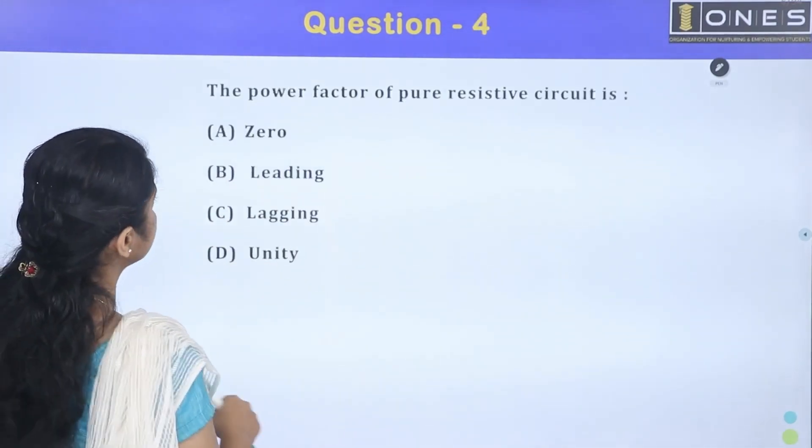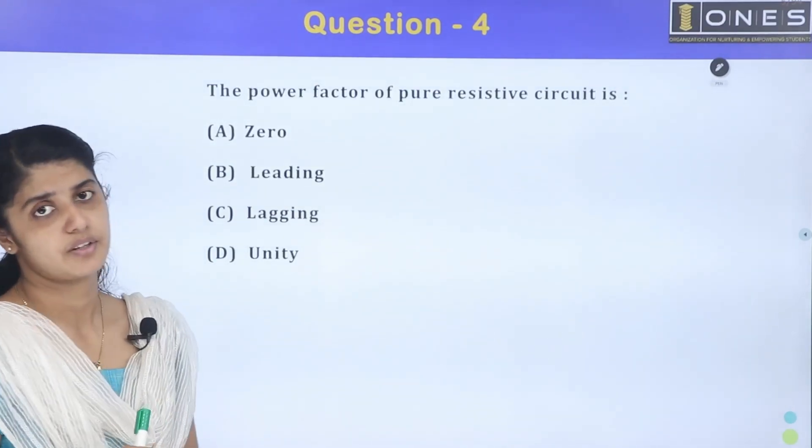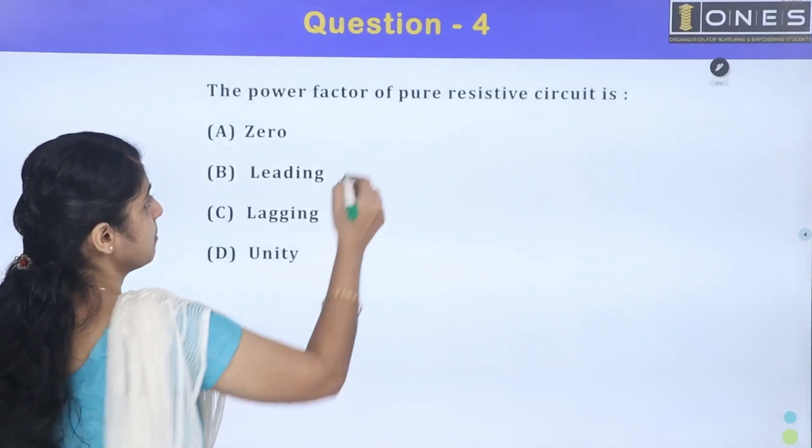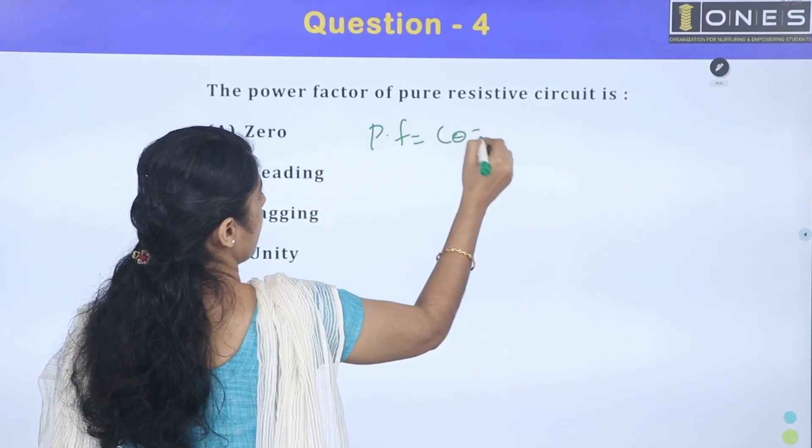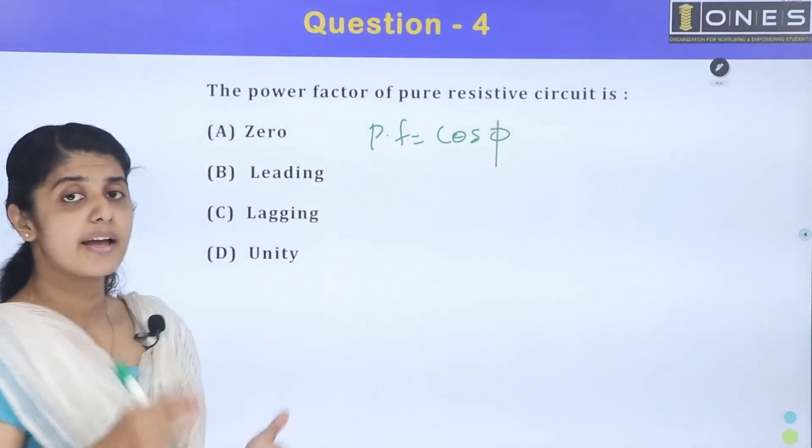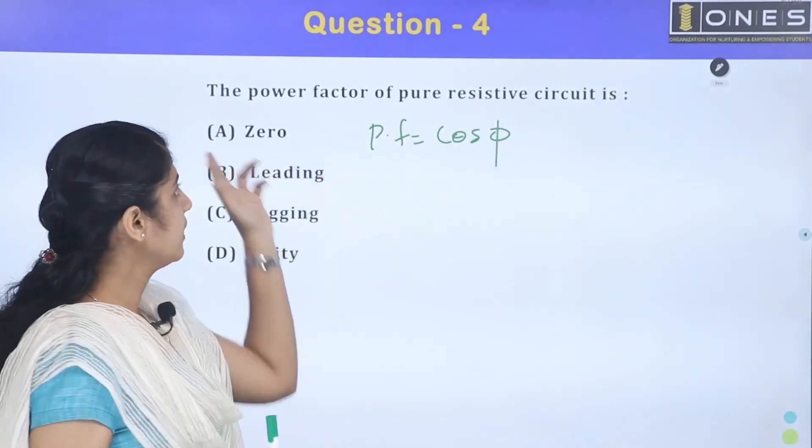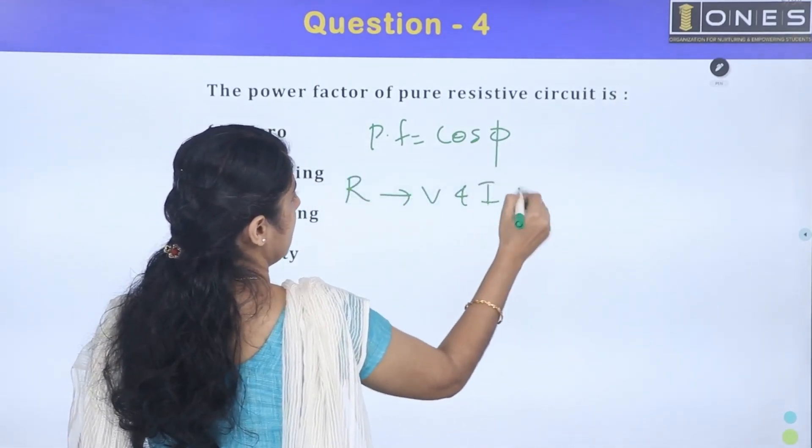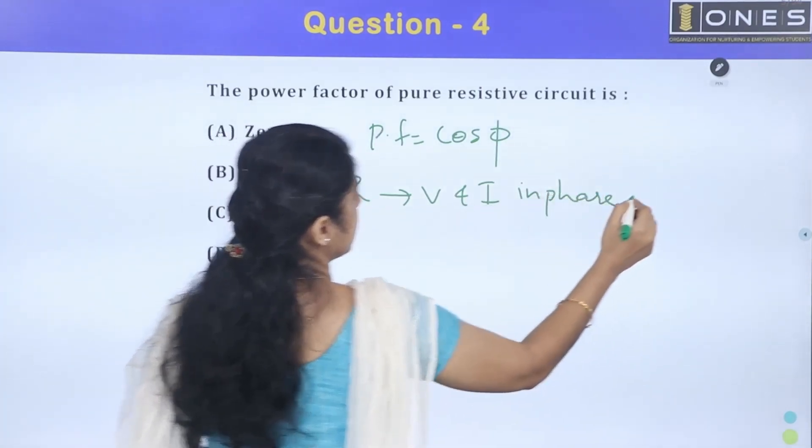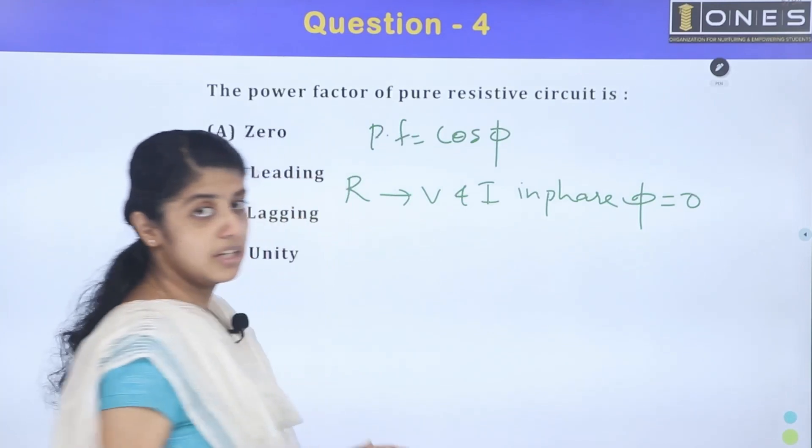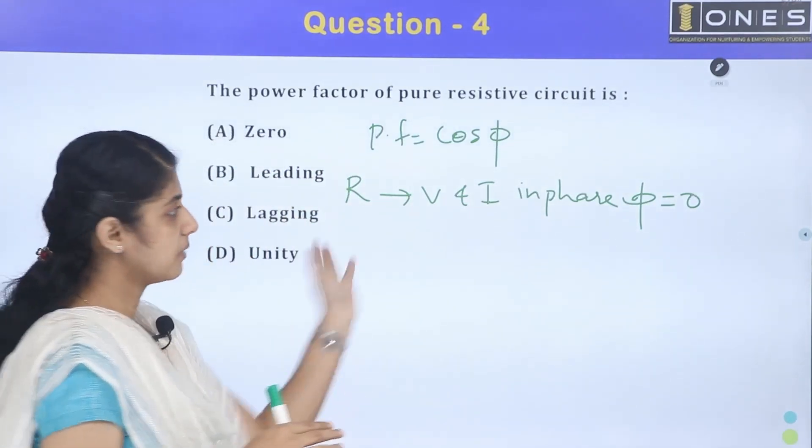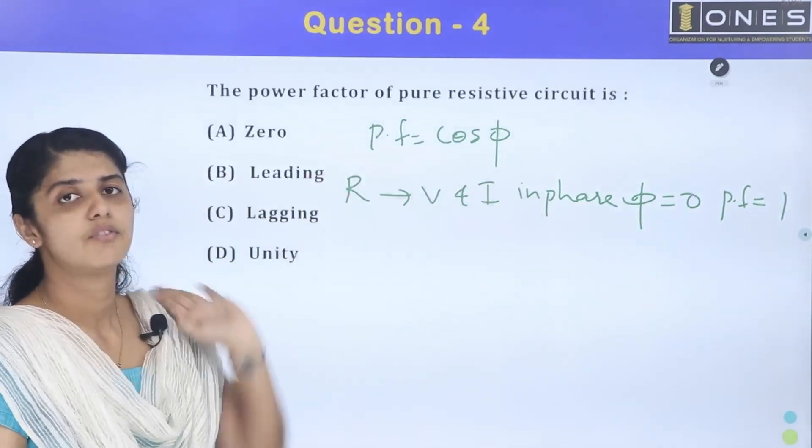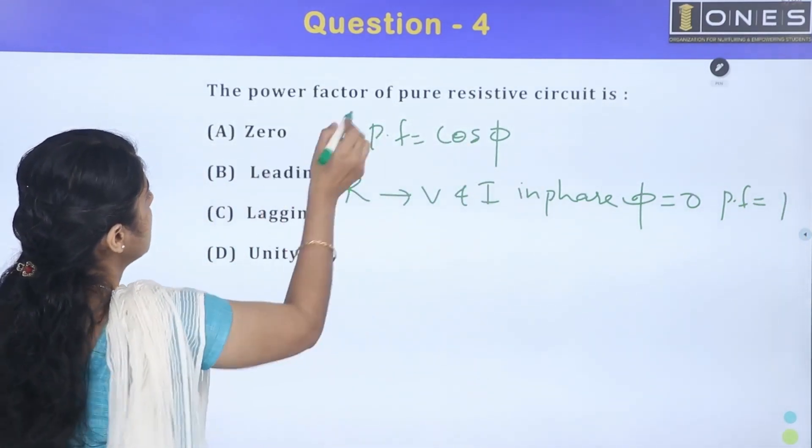Next question: Power factor of a pure resistive circuit. Power factor is cos phi, where phi is the angle between voltage and current. In a resistive circuit, V and I are in phase, so phi equals 0. Therefore cos phi equals 1, and the power factor is unity or 1.